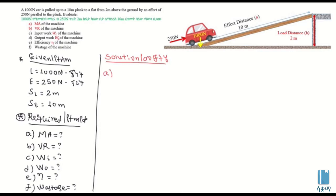Mechanical advantage is that you can use the formula. Mechanical advantage is that you can use the load. Mechanical advantage is the ratio of the load to the effort. You can use the load over the effort to calculate it.